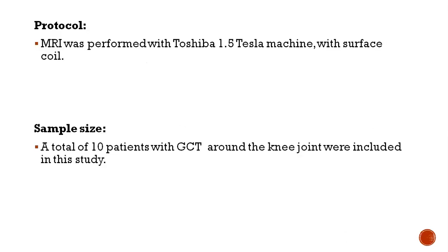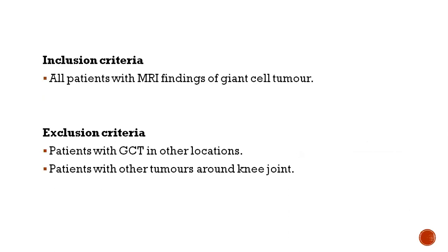The MRI was done on a Toshiba 1.5 Tesla machine using surface coils for the knee. Sample size was 10 patients. Inclusion criteria: all patients who had MRI findings of giant cell tumor around the knee, including proximal tibia and distal femur, were included. Other locations of GCTs were not included in this study.